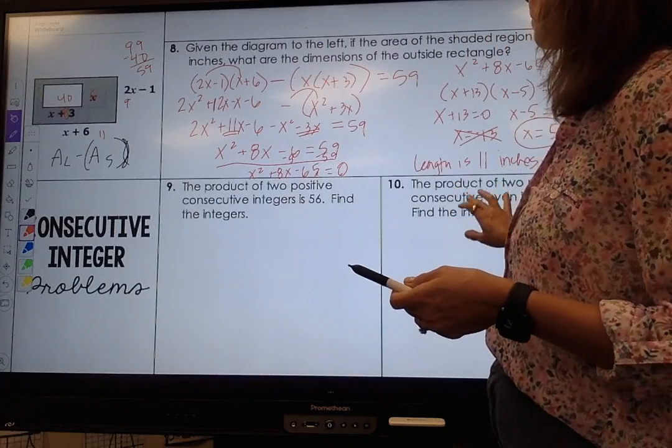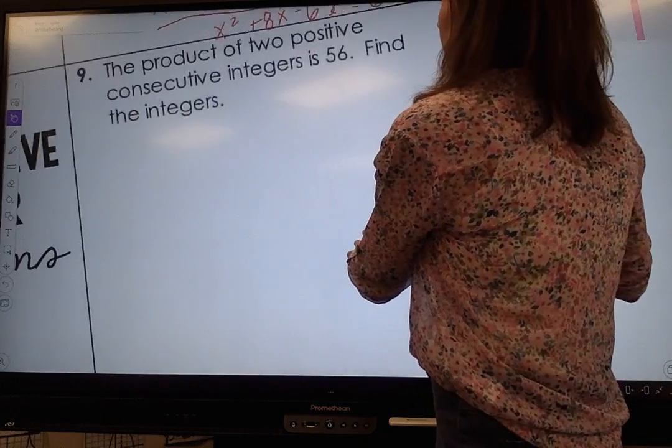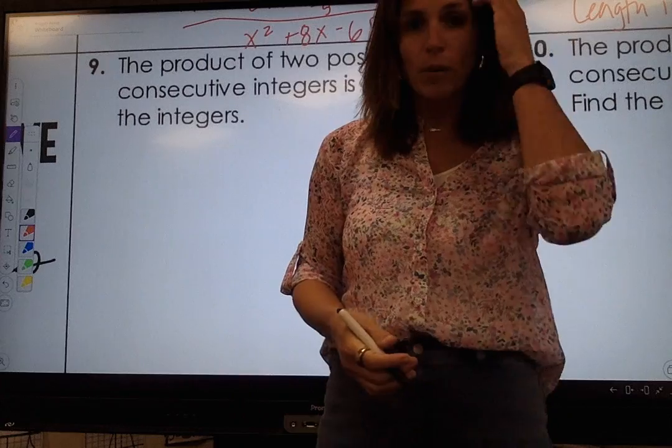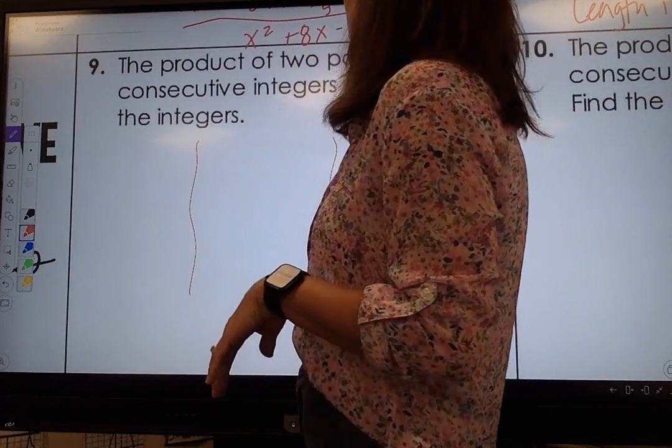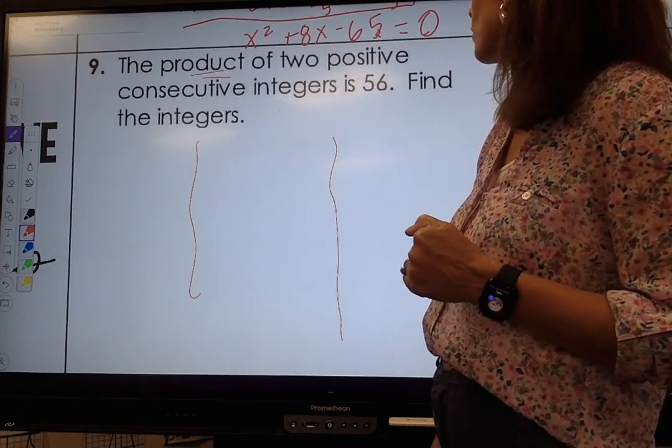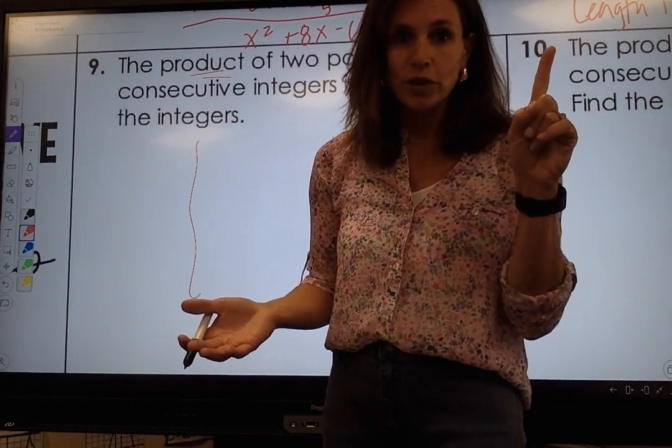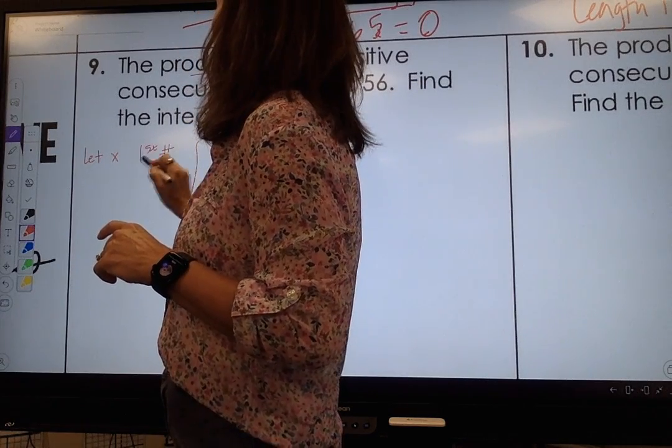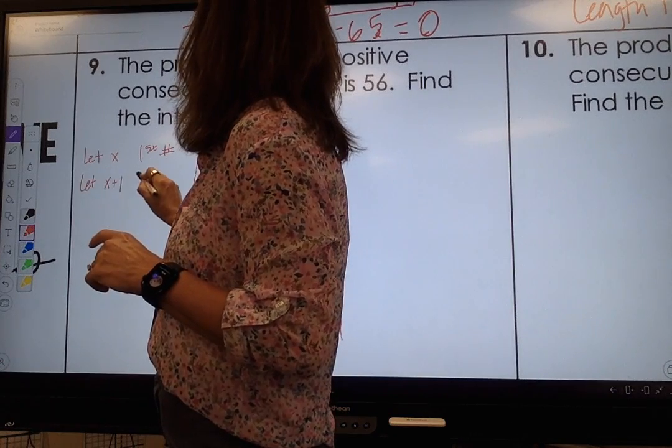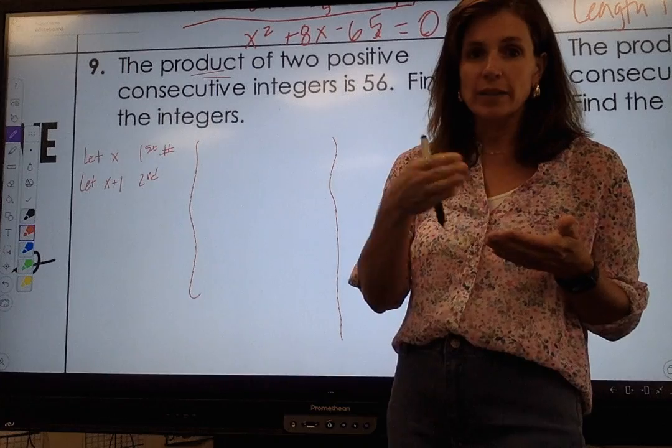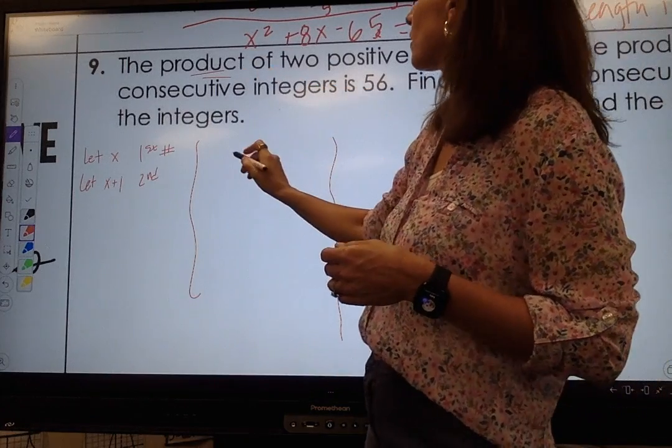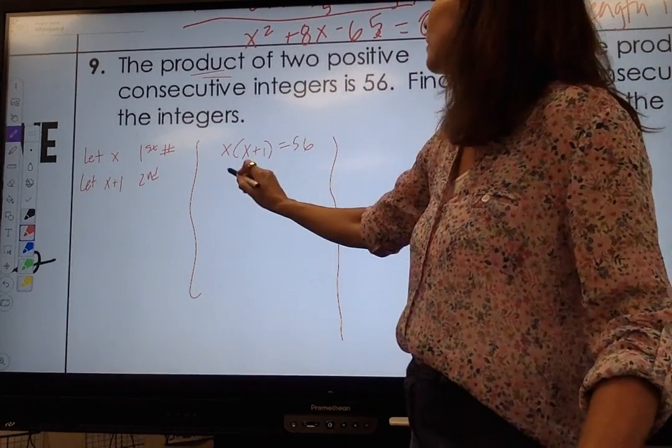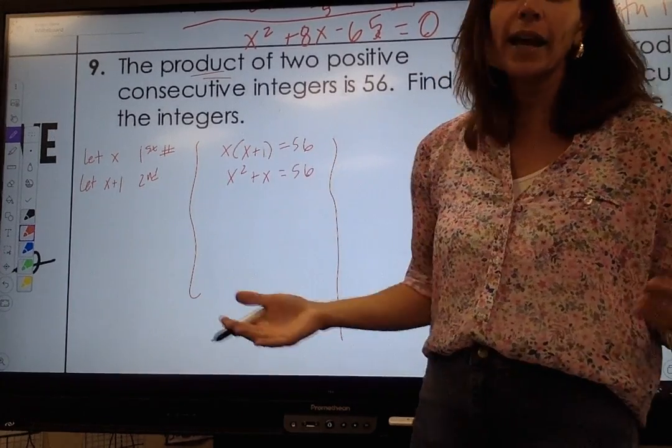I have the product of two positive consecutive integers is 56. I don't know my first number so I'm going to let x be my first number and I'm going to let x plus 1 be my second number. They're consecutive integers so x and x plus 1, and I know the product is 56 so that means multiply. So x times x plus 1 is equal to 56, and so now I multiply: x squared plus x equals 56, and now I just factor.